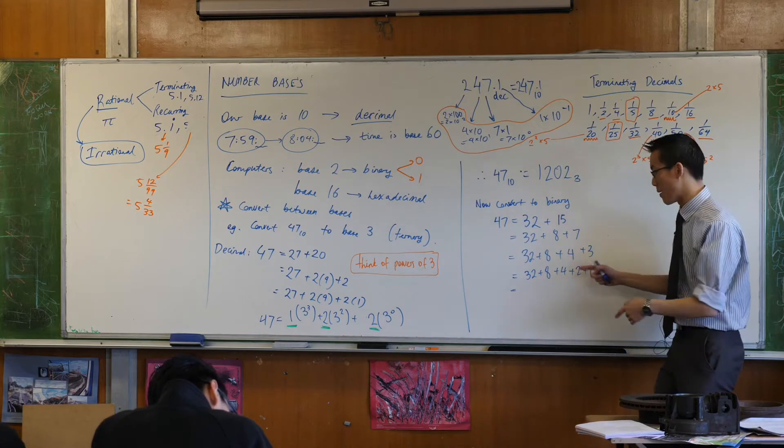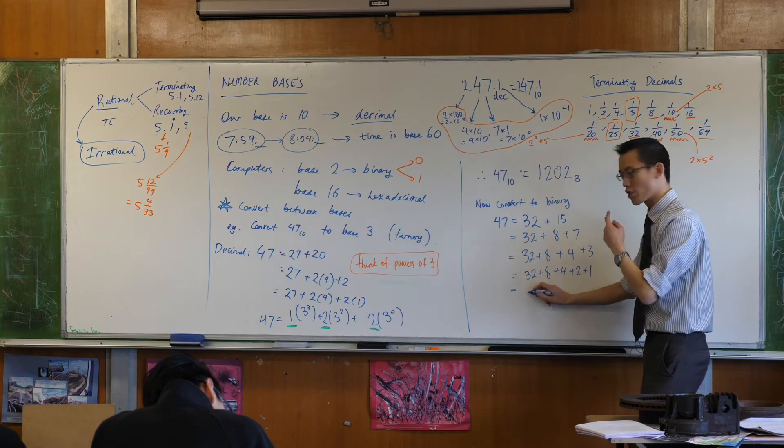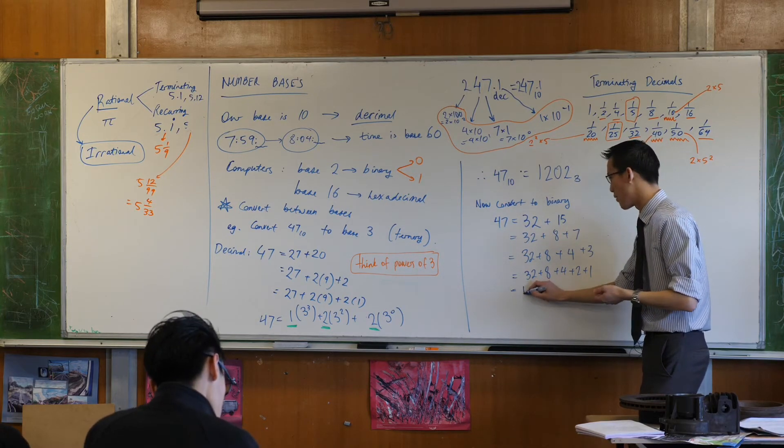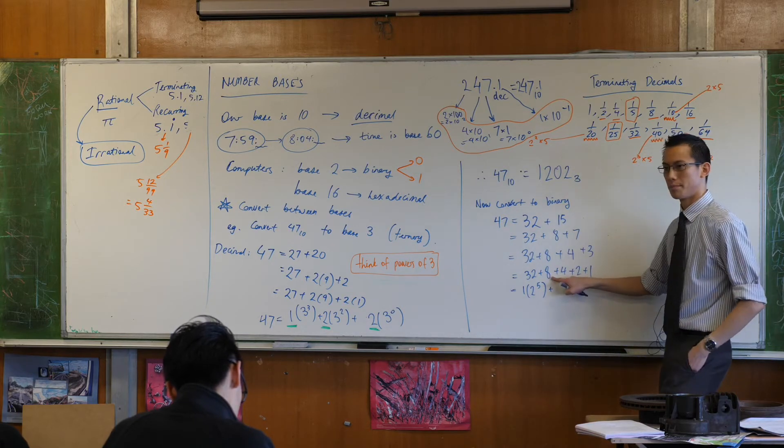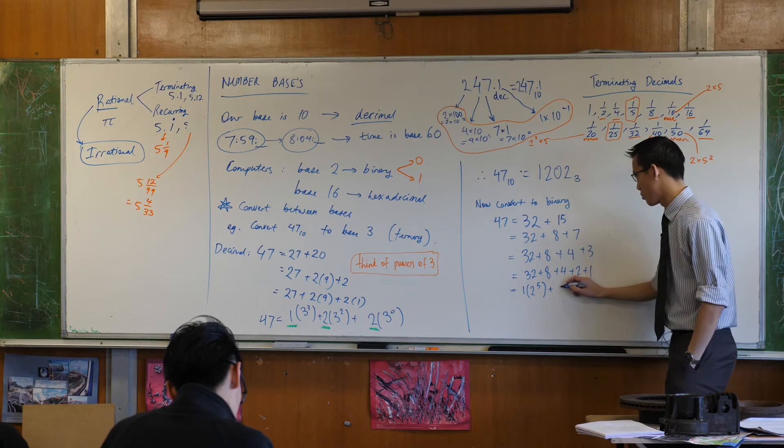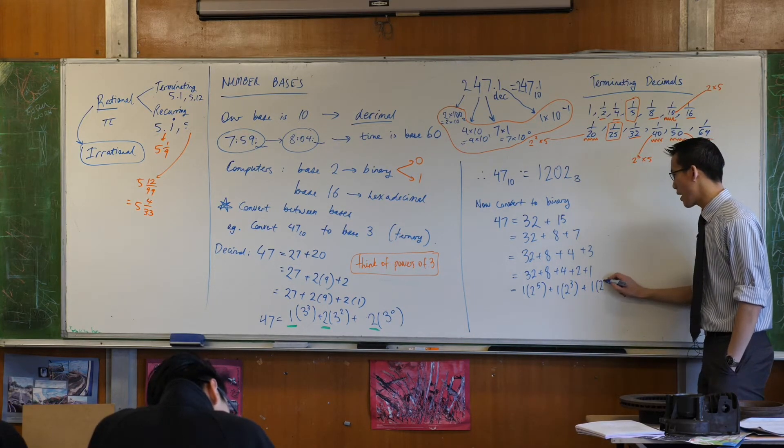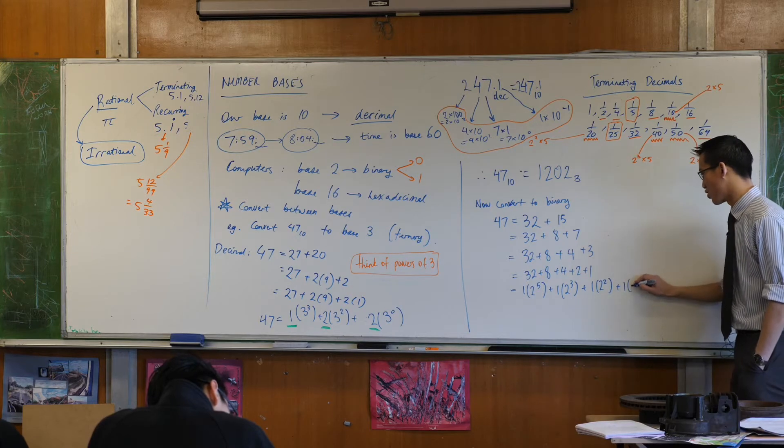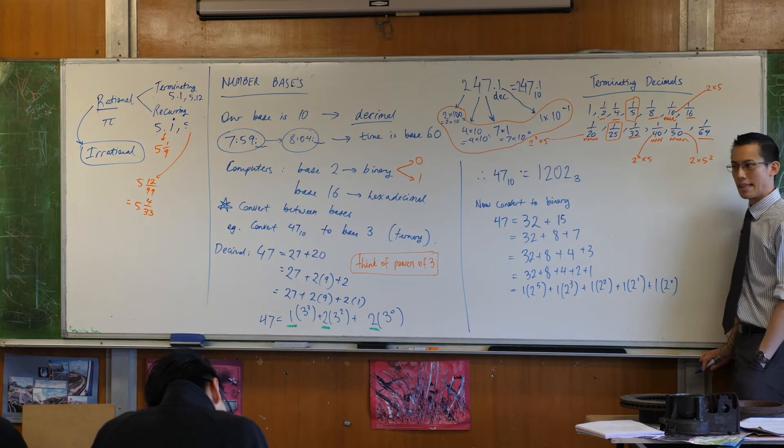So now, I'm going to write the powers of 2 as powers of 2. This, as Raj said, that's 2 to the 5. I've got one of those. What's this one? That's 2 cubed. So I've got one of those. I've got a 2 squared. I've got a 2 to the power of 1. And lastly, I have a 2 to the power of 0.